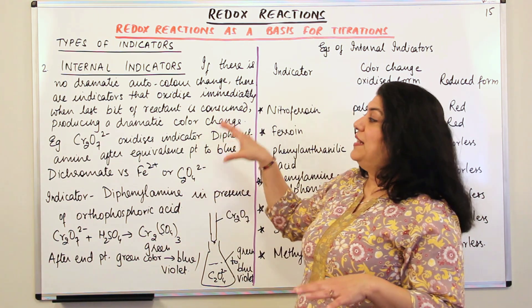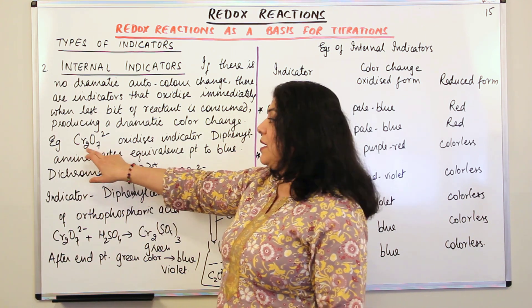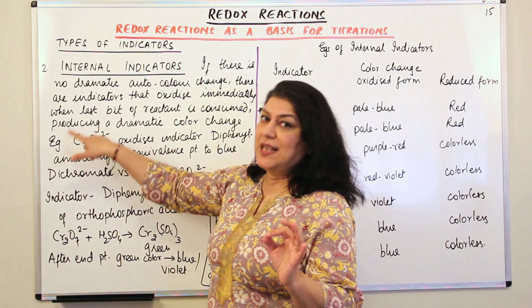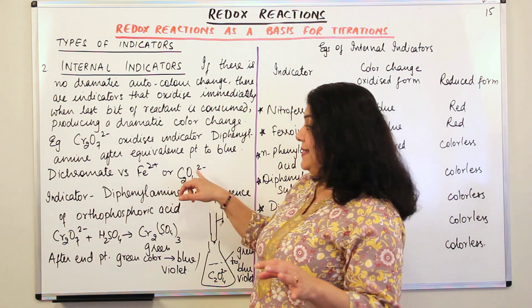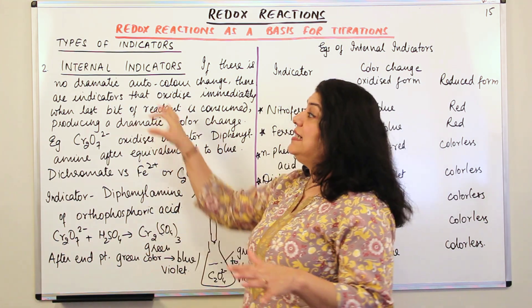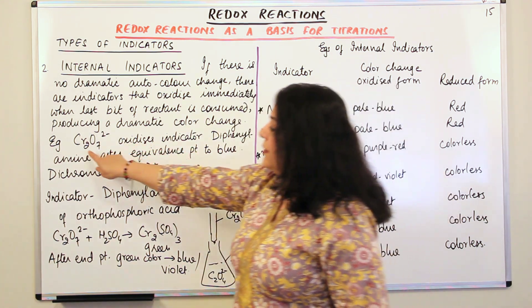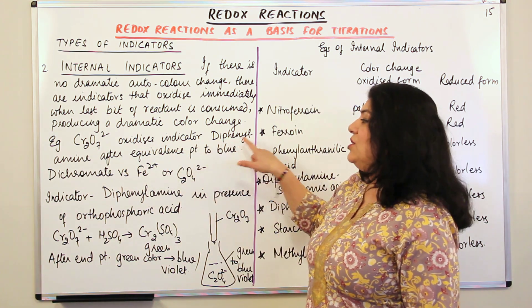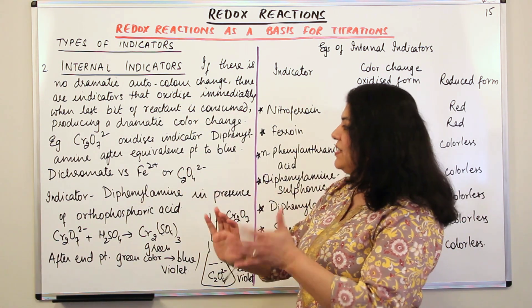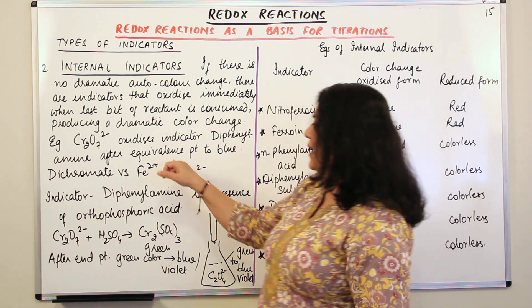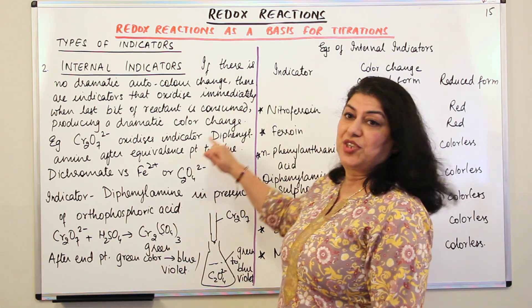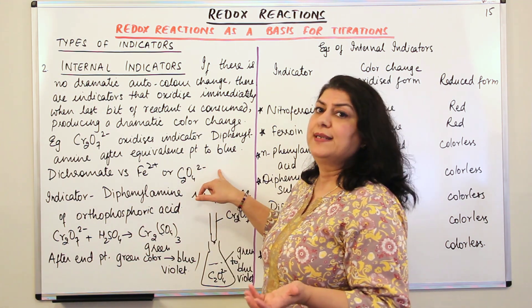An example of this kind of indicator is where you use dichromate ions — potassium dichromate — which oxidizes an indicator. When you titrate potassium dichromate against Mohr's salt or against oxalic acid, you use diphenylamine as the internal indicator. The dichromate ion oxidizes diphenylamine after the equivalence point — when all of the reductant has been used up — and that one drop of excess potassium dichromate turns the diphenylamine blue-violet.